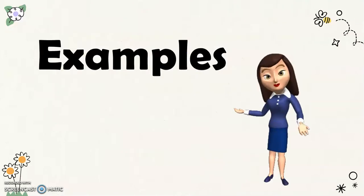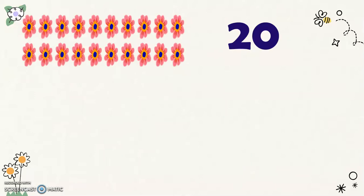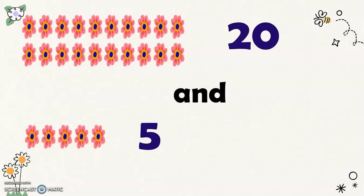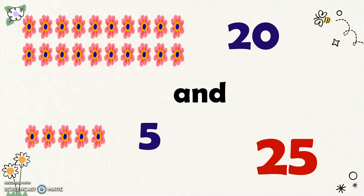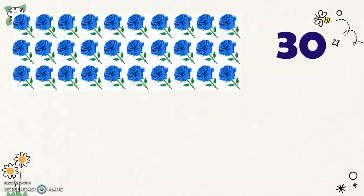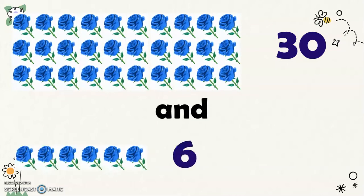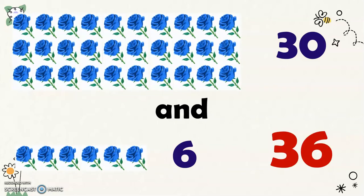Now I'm going to show some examples. For example, we have twenty flowers and five flowers together — we will have twenty-five. Now, if we have thirty flowers and six flowers, then we'll have thirty-six flowers in all.